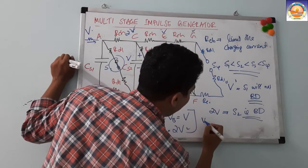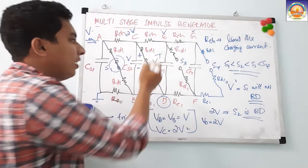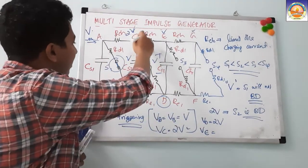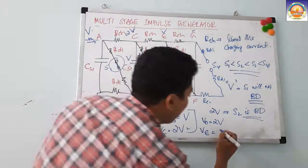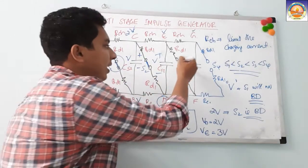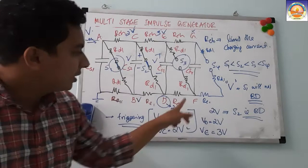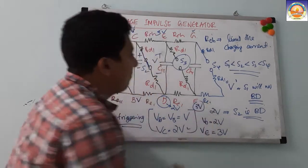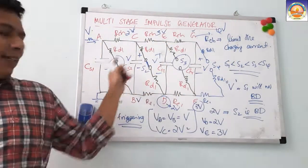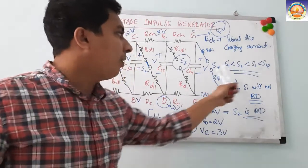With potential 2V at D and capacitor CS3 already charged to V, point E will have 2V + V = 3V. Then S3 breaks down, making potential at F equal to 3V. Adding across CS4 again gives 3V + V = 4V at point G. So the total potential built up at point G is 4V when all switches operate.